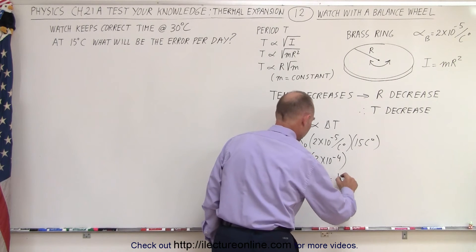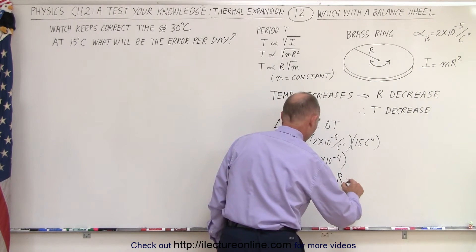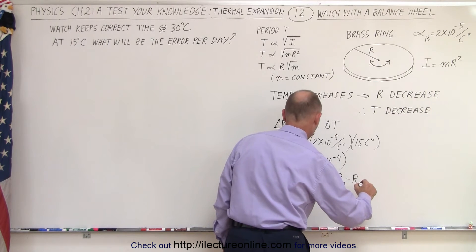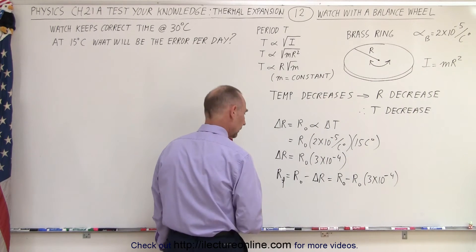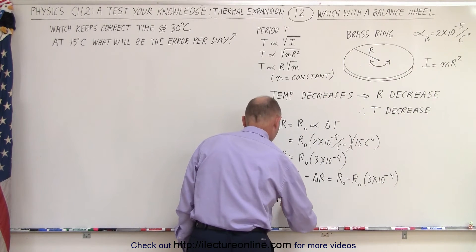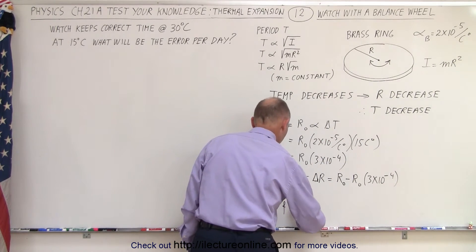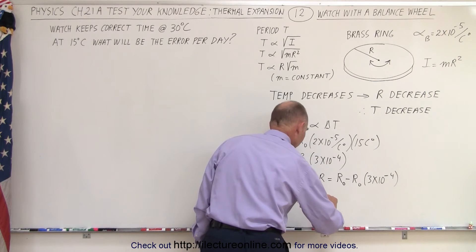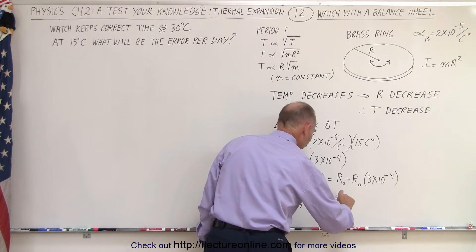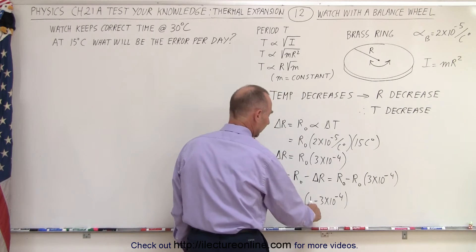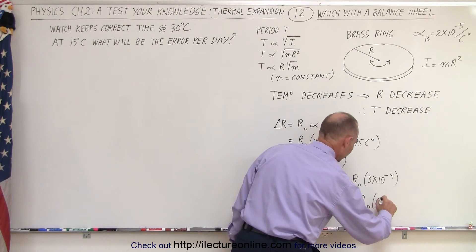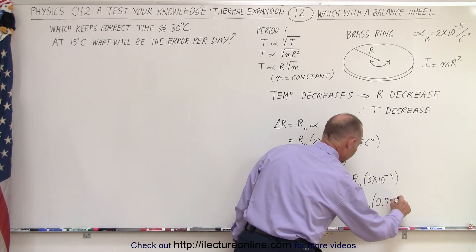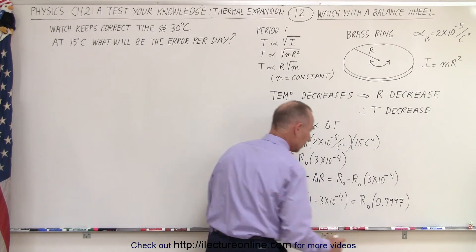And so that's going to be equal to, we can factor out an R. Let me write it like this first: R initial times R initial times 3×10⁻⁴. Factor out an R. So we say R final is equal to R initial times (1 - 3×10⁻⁴). And that can then be written as R initial times 0.9997, like this.